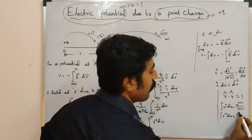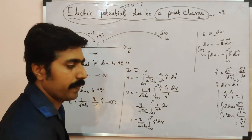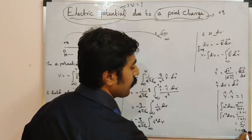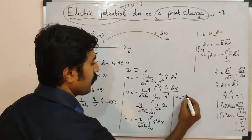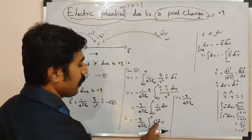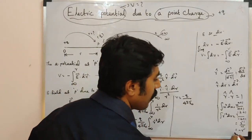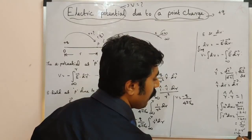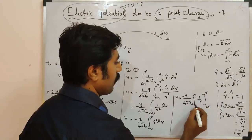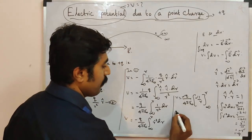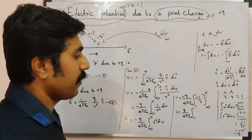So r⁻² integrates to r⁻¹/(−1). Substituting: V = −(Q/4πε₀) · [−1/r] from infinity to r. The two negatives cancel, giving V = (Q/4πε₀) · [1/r] with limits from infinity to r.